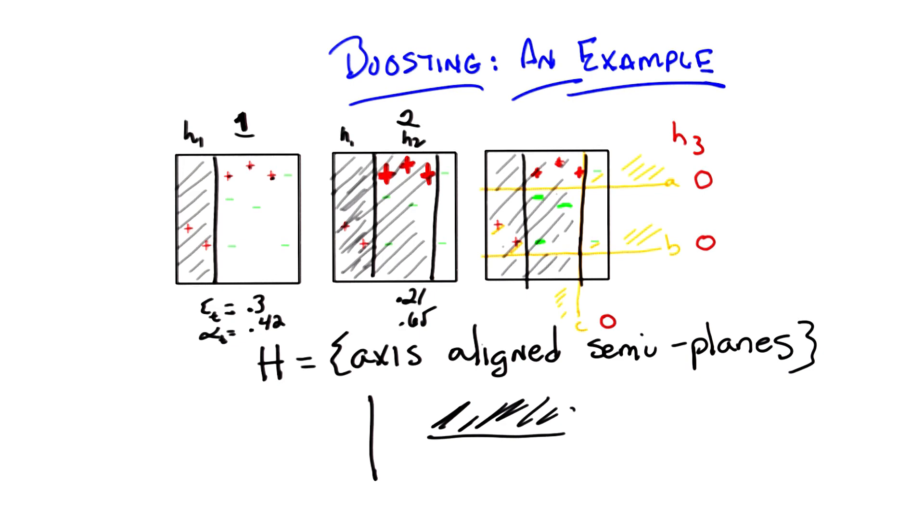So A is a horizontal line that says everything above it should be a plus. B is another horizontal line that says everything above it should be a plus. And C is a vertical line, like the last two hypotheses that we found, that says everything to the left should be a plus. So which do you think is the right one? Go.